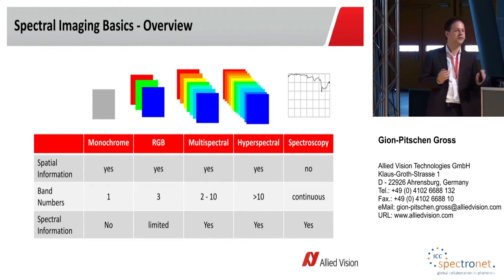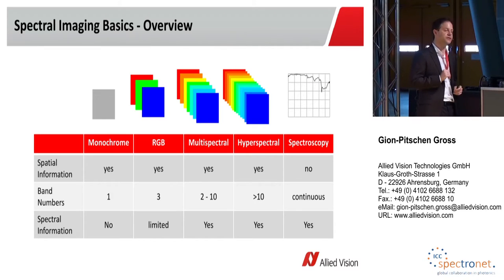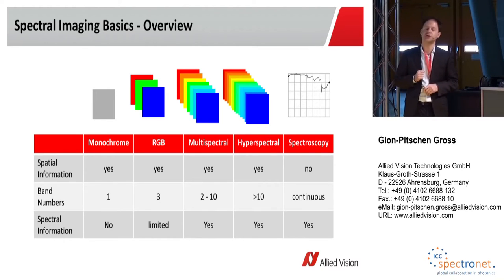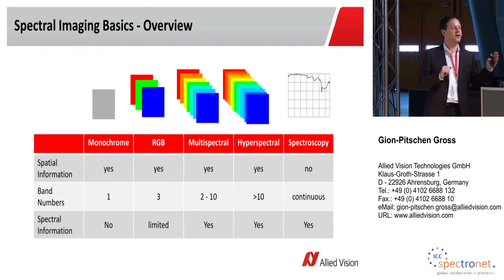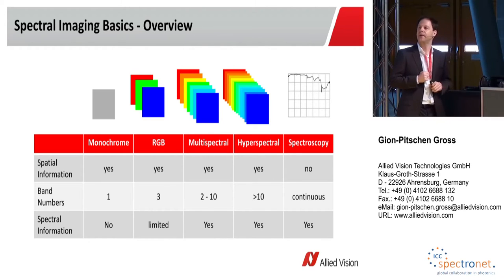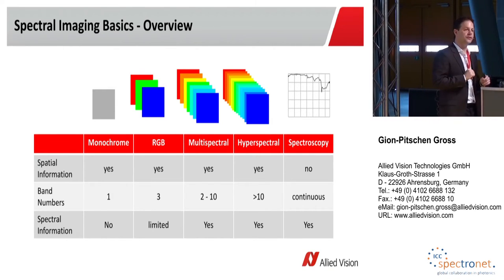In multispectral imaging, we typically have between two and ten different filters with different widths — they can be very narrow or very wide, depending on the application. In hyperspectral imaging, we usually have many more than ten, typically more than a hundred different filters, and we observe quite a continuous spectrum. As a comparison, spectroscopy observes just one point but with essentially continuous spectral information.